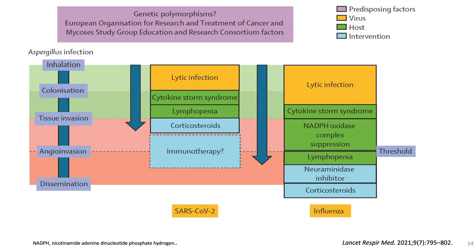Regarding Aspergillus tracheobronchitis, sometimes predisposing factors combined with viral infection — and drugs used to control the COVID cytokine storm — may increase the patient's risk for fungal infection. Once the cytokine storm resolves, the patient may develop invasive pulmonary aspergillosis.